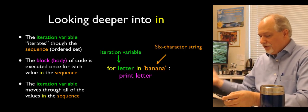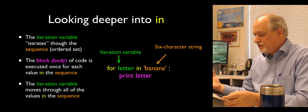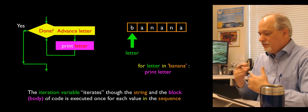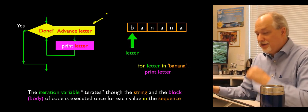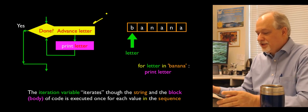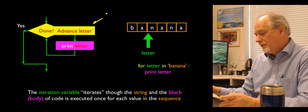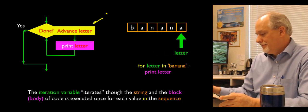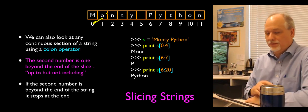With the for loop, it takes care of all the iteration variables for us and goes through the sequence. The for loop moves letter through the successive characters in banana — letter is being advanced for us by the for statement. So that's looping through strings.